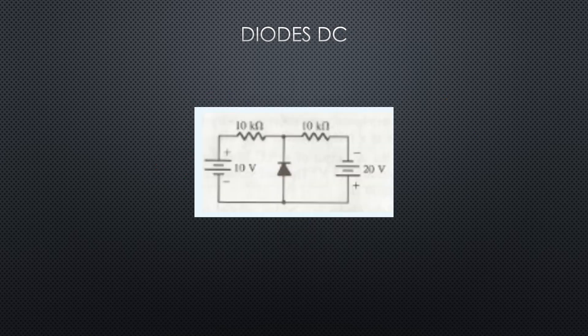Same thing here — we pull the diode out and we want to find the voltage from point A to point B. With the diode out of the circuit, we've got 30 volts series aiding from those two supplies, so we've got plus-to-minus 15 and plus-to-minus 15 volts on both resistors.